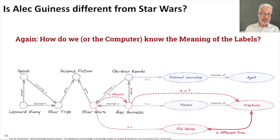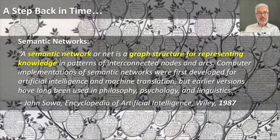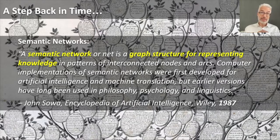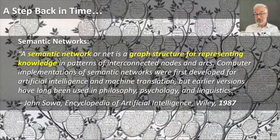What's still not clear is what the meaning of the labels actually is, even when doing procedural translations. Let's step back in time — this kind of knowledge graph is quite old. A definition from the Encyclopedia of Artificial Intelligence by John Sowa from 1987 states: a semantic network is a graph structure for representing knowledge in patterns of interconnected nodes and arcs. Computer implementations of semantic networks were first developed for AI and machine translation, but earlier versions have long been used in philosophy, psychology, and linguistics — like the Porphyrian tree of knowledge.